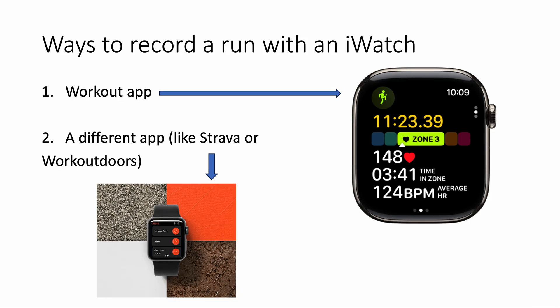Before we do that, we need to talk about ways to record your run if you're using an Apple Watch. There are two options. The most common option is using the built-in Workout app made by Apple — it's a pretty good app with lots of customization options, and you can sync workouts from TrainingPeaks to that app. Alternatively, you could use a third-party app like Strava or Work Outdoors, which will also upload to Strava.